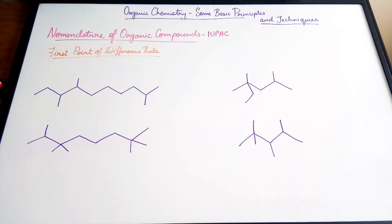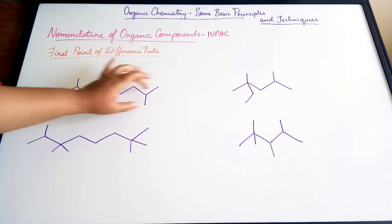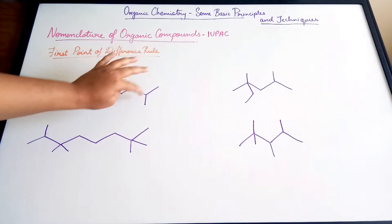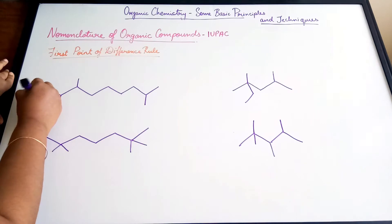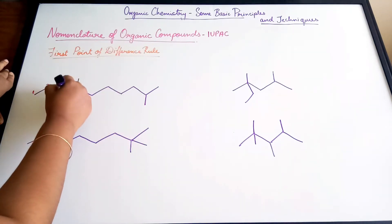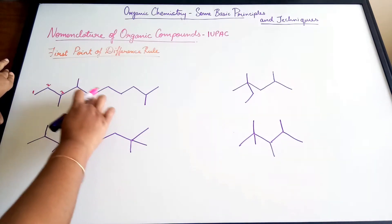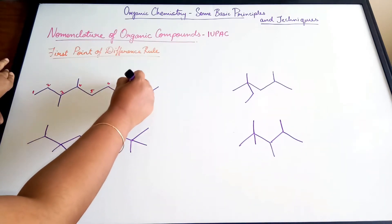Rather than just explaining the rule, we'll work through examples. In the first example, the main chain is obvious because it has one, two, three, four, five, six, seven, eight, nine, and ten carbon atoms. Let's number it — going from left to right: one, two, three, four, five, six, seven, eight, nine, and ten.